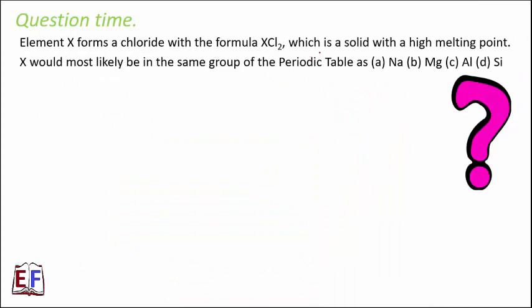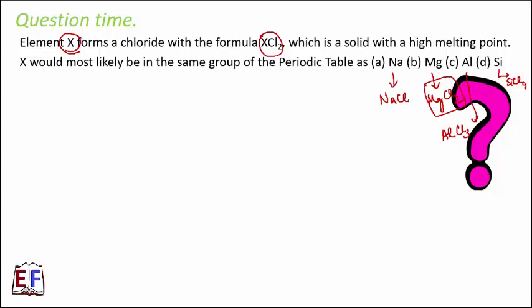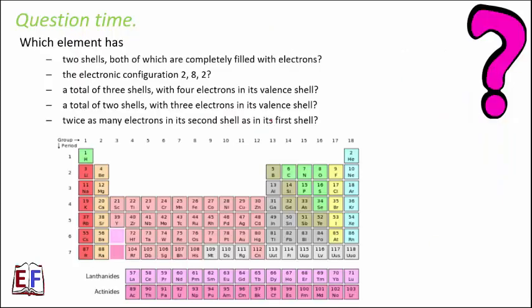Element X forms a chloride with the formula XCl₂, which is a solid with a high melting point. X would most likely be in the same group as which element: sodium, magnesium, aluminium, or silicon? Sodium forms NaCl, magnesium forms MgCl₂, aluminium forms AlCl₃, and silicon forms SiCl₄. Since X forms XCl₂, this is very similar to MgCl₂, so X likely lies in the same group as magnesium. The correct option is magnesium.